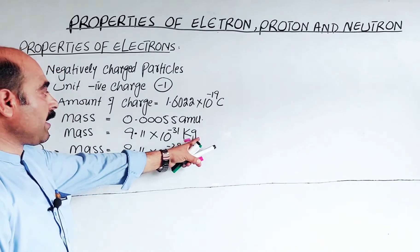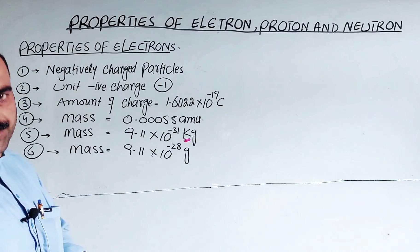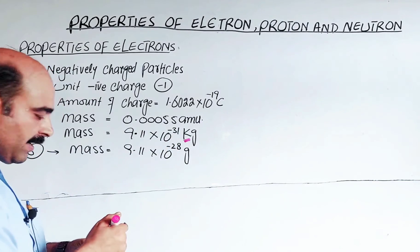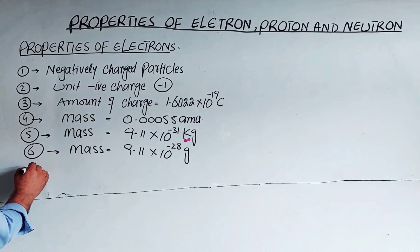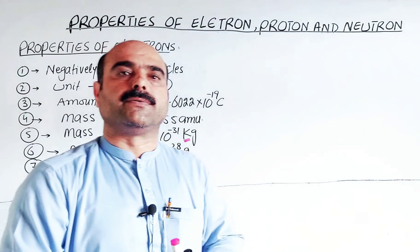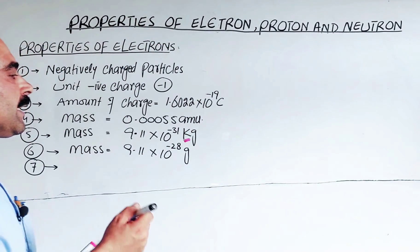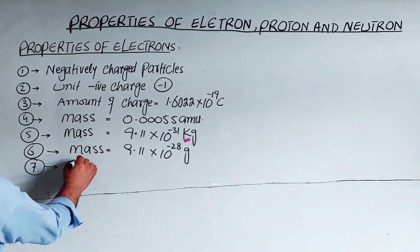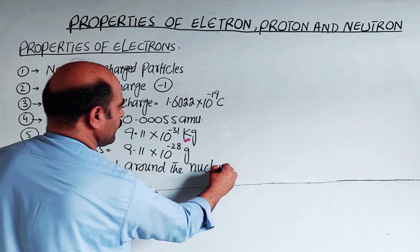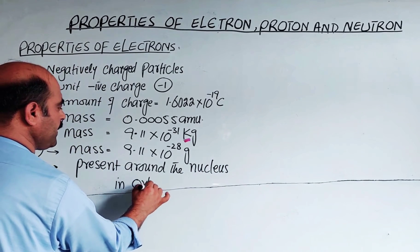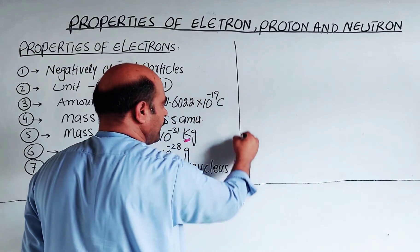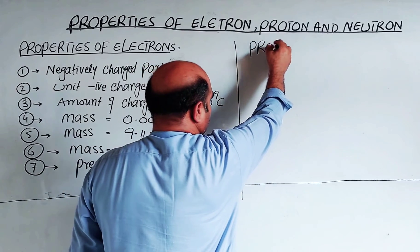To convert from kilograms to grams: the prefix 'kilo' means thousand, which equals 10³, so that is a positive 3. Therefore, minus 31 plus 3 gives minus 28 grams. Regarding position in the atom, scientists say that electrons are revolving around the nucleus in fixed circular paths called orbits.